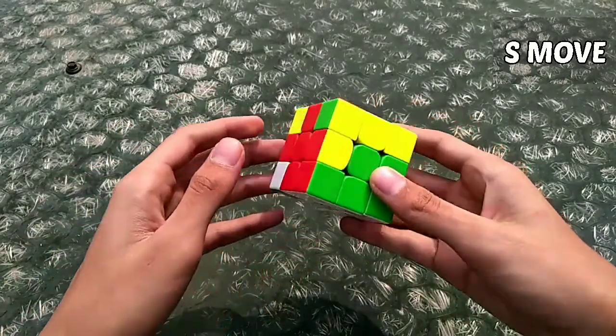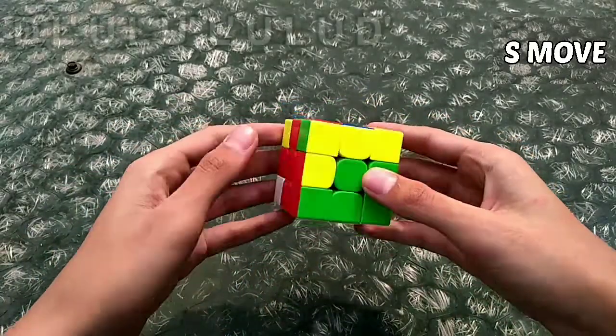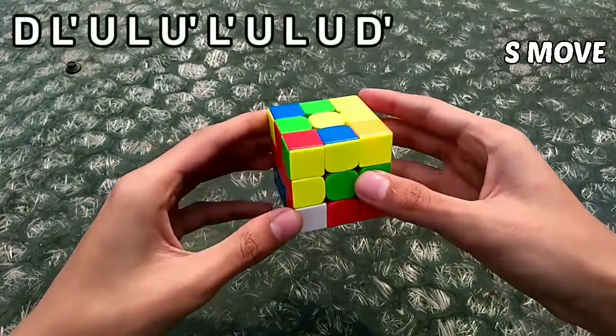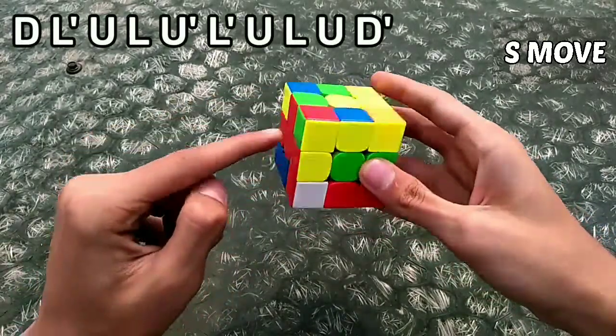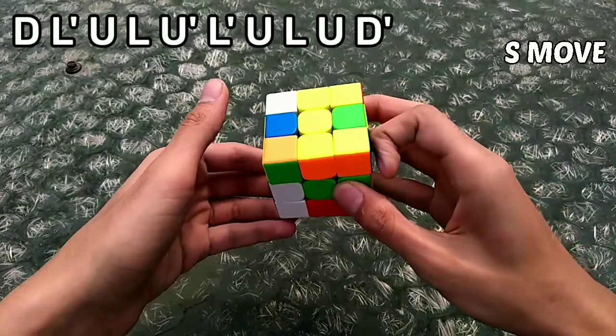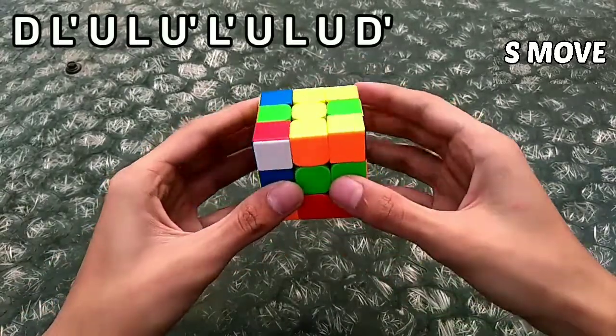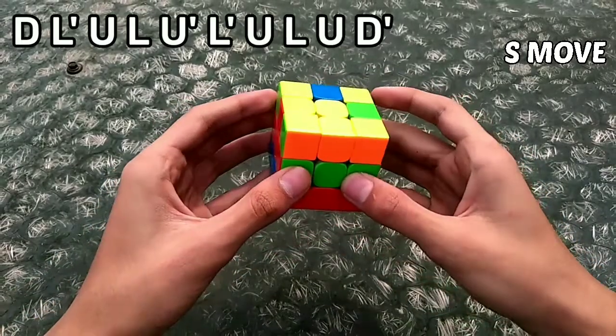he just did pseudo slotting for that. What he did was a D and pair these two pieces with L', U, L, and insert both of them like so, and a D' for F2L.